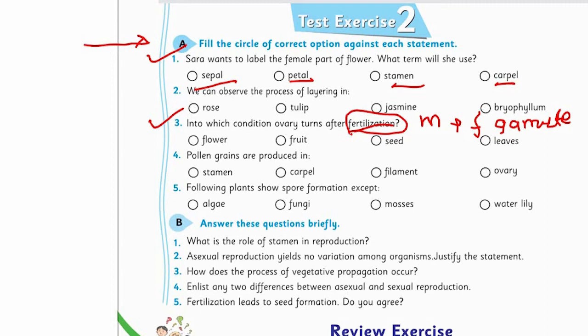Pollen grains are produced in stamen, carpal, filament, or ovary — wherever the pollen grains are produced, you know very well. Find the right structure and fill its circle. Then comes Part B: Answer these questions briefly, meaning wrap up your answer in 3 to 4 sentences.